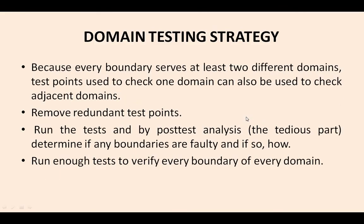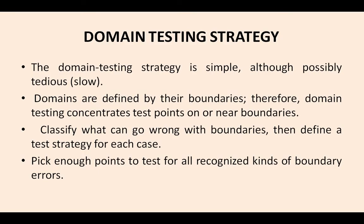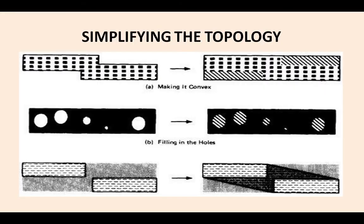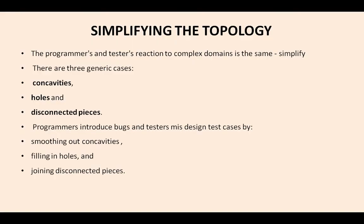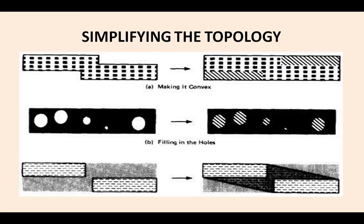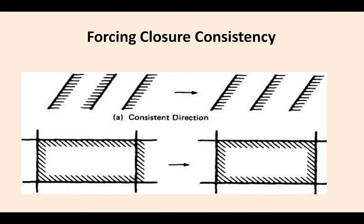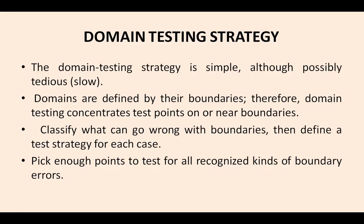Welcome to Intelligible Tutorials. In today's session we are going to discuss the domain testing strategy. In the previous slides we discussed simplifying topology — concavities, holes, disconnected pieces, ambiguities, and overlapping domains — how to repair them, how to simplify the topology, and how to force closure consistency, meaning putting all the domains in one consistent direction. That is called closure consistency.